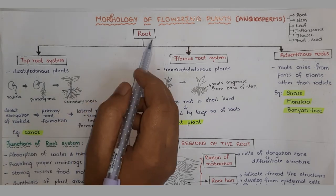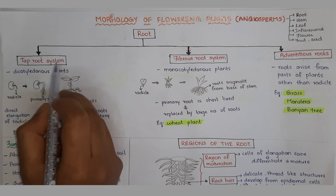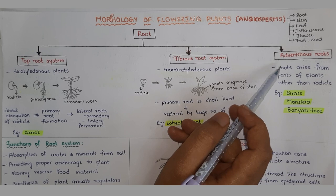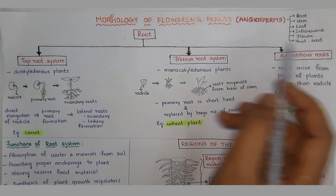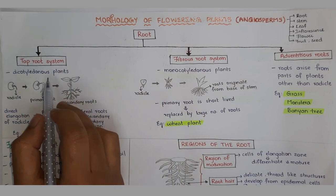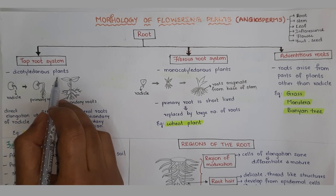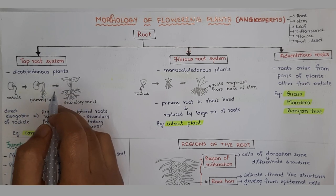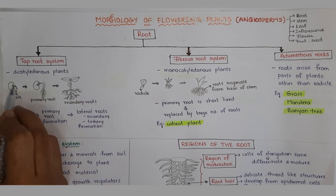Now let's start the topic: root. We have mainly two types of root systems — tap root system and fibrous root system. A third type is also present, which is the adventitious root system. Coming to the tap root system, it is majorly seen in dicotyledon plants, also called dicots. These are flowering plants which have two cotyledons in their seeds.